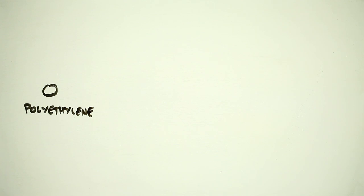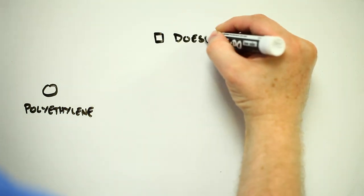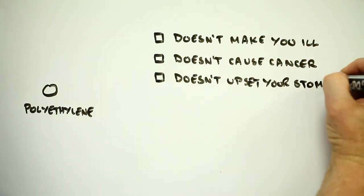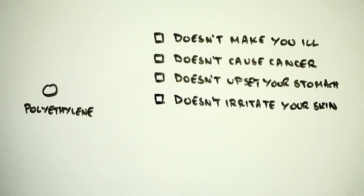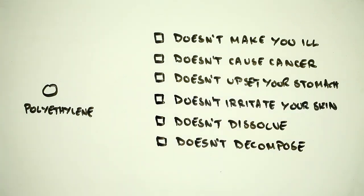Polyethylene, the plastic most microbeads are made of, is pretty non-toxic. It doesn't cause cancer, it doesn't seem to be a problem if you eat it, and it doesn't irritate your skin. In fact, it doesn't do much of anything, including dissolve or decompose, and this is where things get tricky.